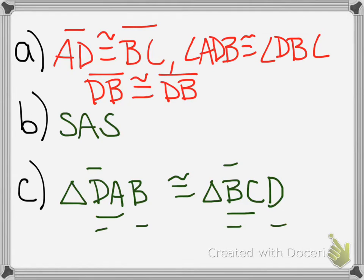And so that's one way to name these triangles. Triangle DAB is congruent to triangle BCD. And that would complete the answer for problem number one.